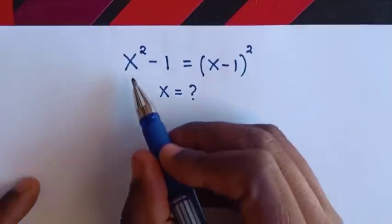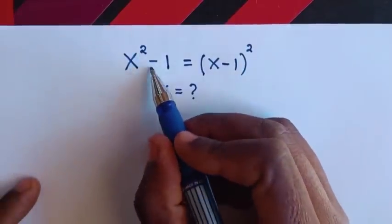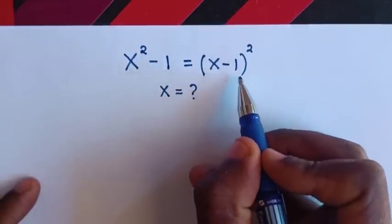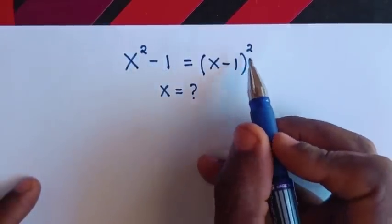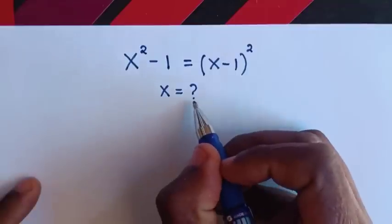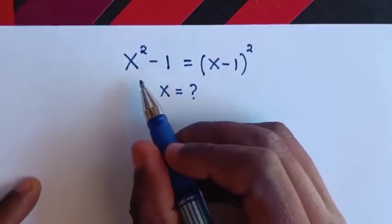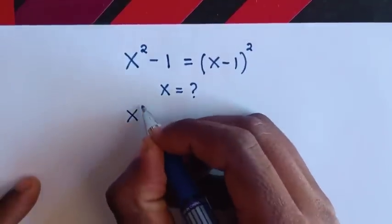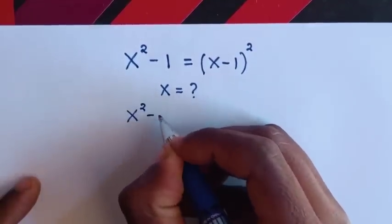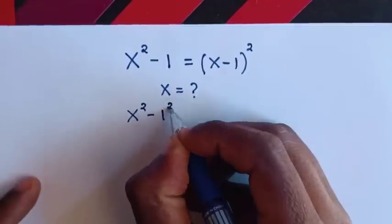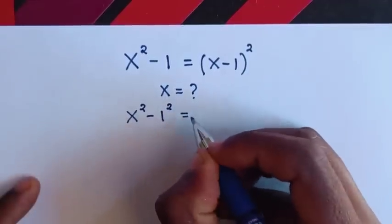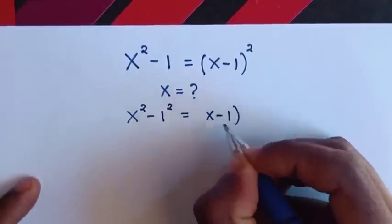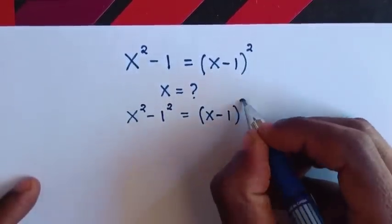Hello. How to solve x squared minus 1 is equal to (x minus 1) squared, to find the value of x. So this into perfect square, it will be x squared minus 1 squared is equal to (x minus 1) squared.